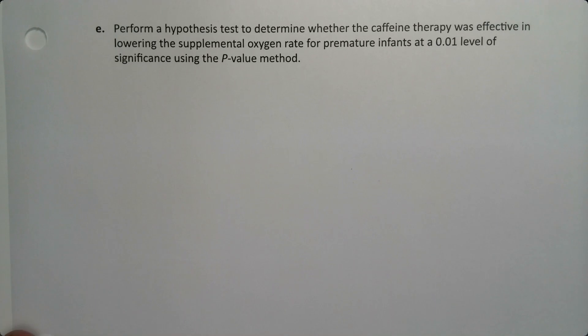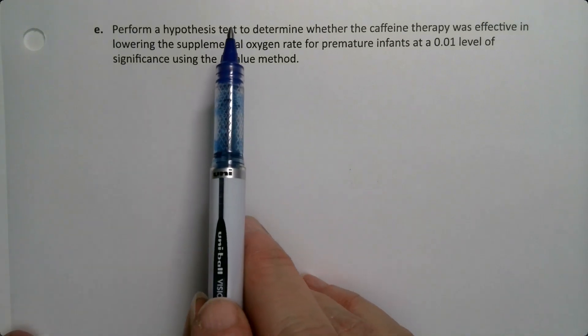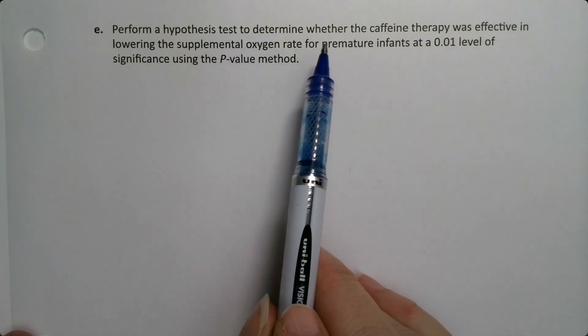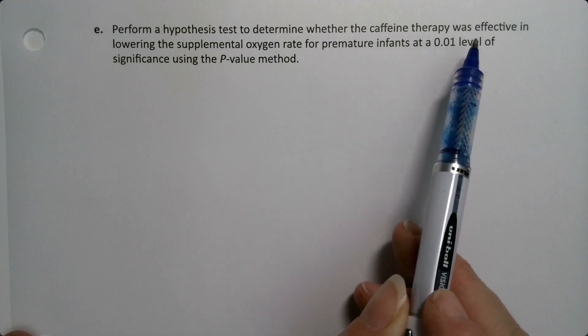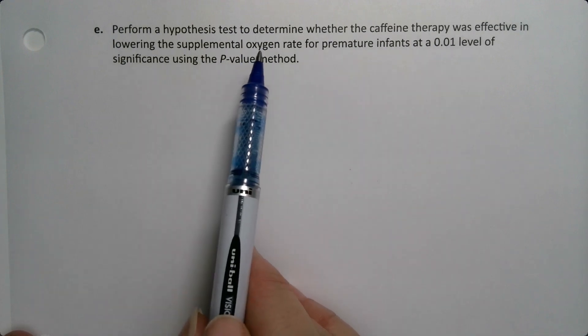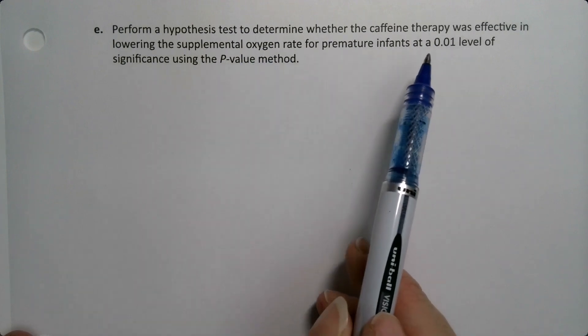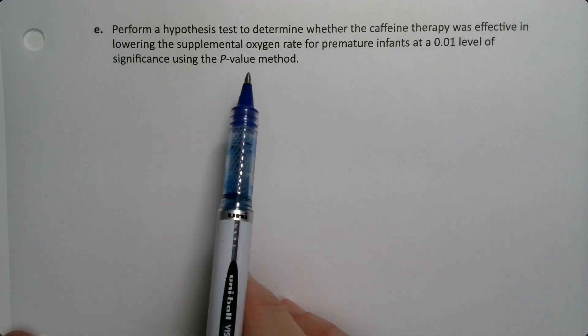We're going to perform a hypothesis test to determine whether the caffeine therapy was effective in lowering the supplemental oxygen rate for premature infants at a 0.01 level of significance using the p-value method.